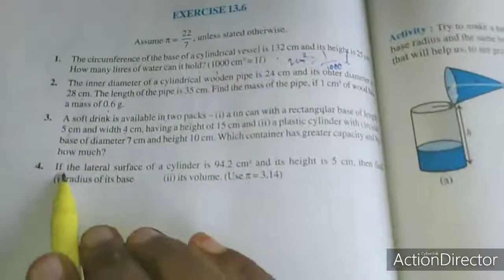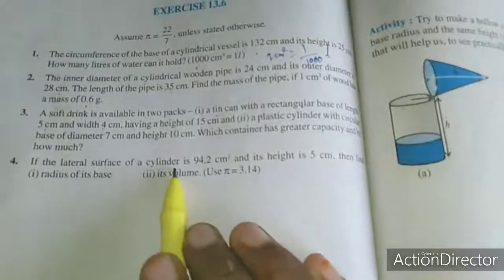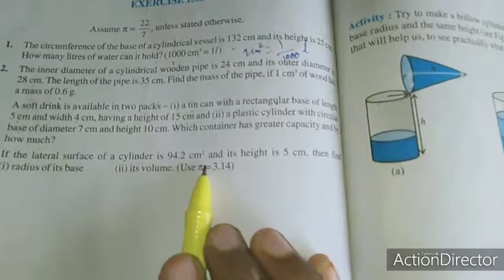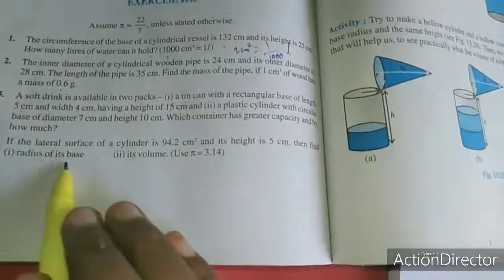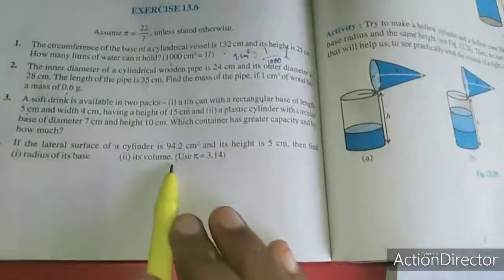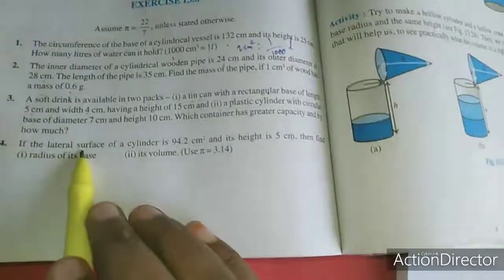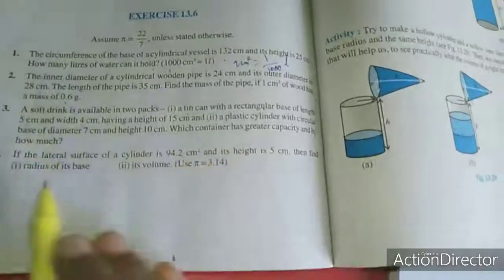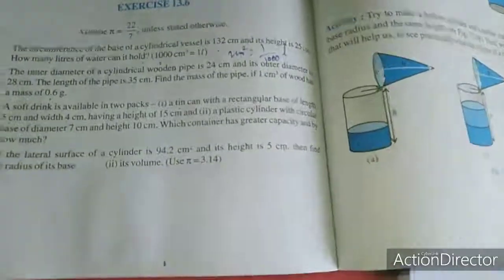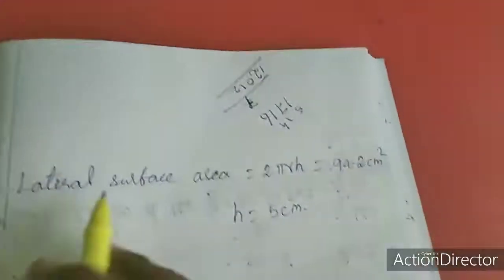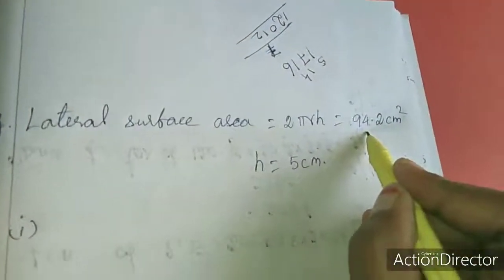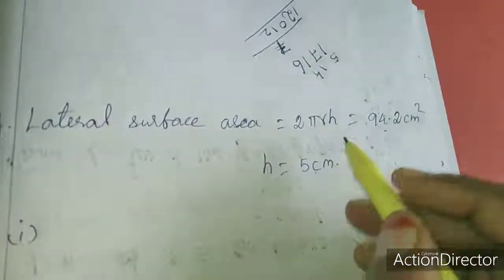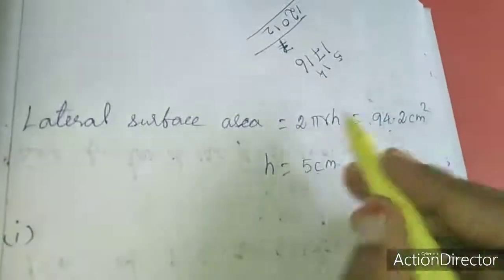Fourth problem: if the lateral surface area of a cylinder is 94.2 square centimeters and its height is 5 centimeters, then find the radius of its base and its volume.